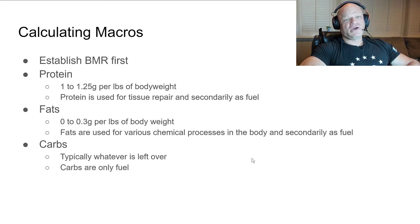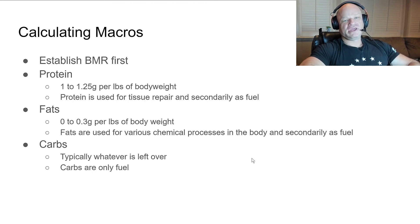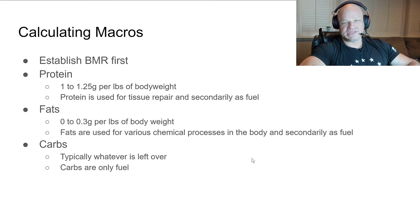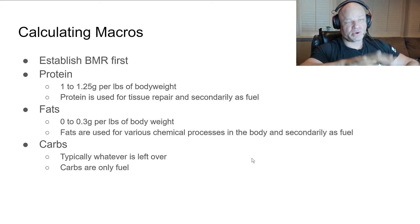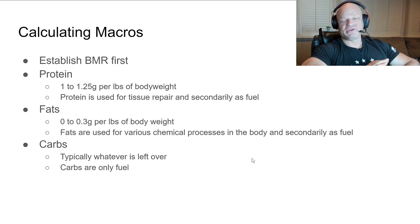Studies have shown that all you need to recover from working out is about 0.75 to 0.8 grams of protein per pound of body weight. Bodybuilders have an obsession with eating too much protein. If you're going to gain 20 pounds of muscle a year, you're only synthesizing about 25 grams of protein per day — so you don't need to eat 400 grams of protein. It's more important to have consistent protein throughout the day. Studies have shown 0.75 grams per pound of body weight is ample to recover from workouts.